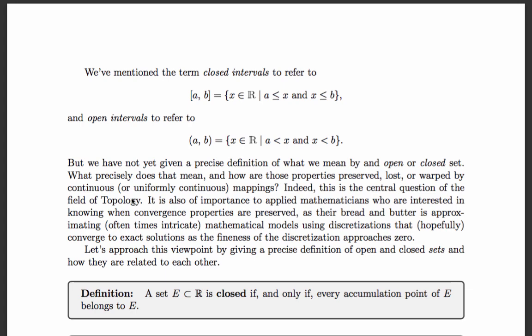And if open and closed is a property of a subset, how is that property preserved, lost, or warped by continuous or possibly uniformly continuous mappings? In fact, this is actually the central question of the field of topology.